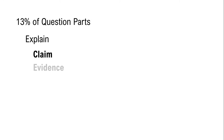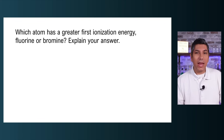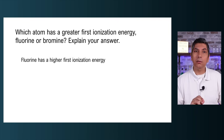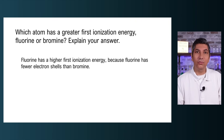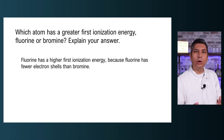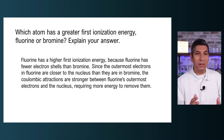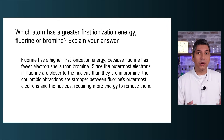This is what you need to do when you're explaining on the AP chemistry exam. You make your claim, you give evidence, and then explain why that evidence is relevant. For example, if the question says which atom has a greater first ionization energy, fluorine or bromine — explain your answer. First, you make your claim: fluorine has a higher first ionization energy. Second, you give evidence: fluorine has fewer electron shells than bromine. Finally, you give the relevance — this is where you close the deal and say why the number of electron shells matters. Since the outermost electrons in fluorine are closer to the nucleus than they are in bromine, the Coulombic attractions are stronger between fluorine's outermost electrons and the nucleus, requiring more energy to remove them.